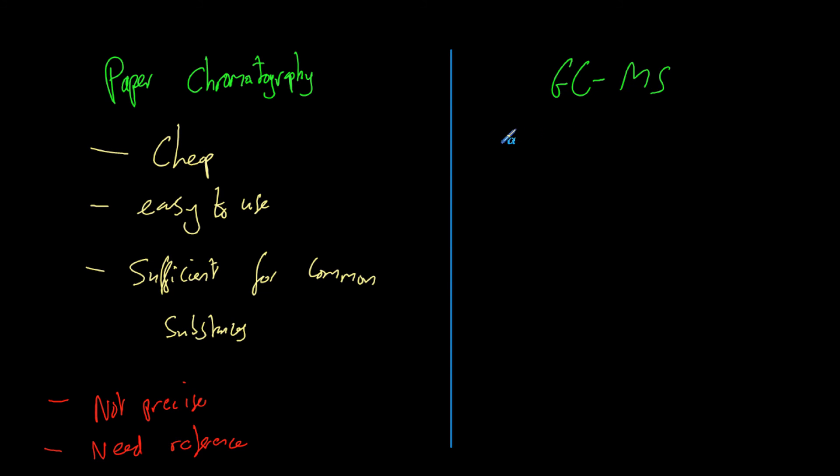Now, gas chromatography and mass spectrometry, the good thing about those is they are very precise. We don't always need a reference. If we use both, we can often figure out what something is without using a reference. We can use tiny samples. They're very sensitive. And they are also very fast. So with paper chromatography, we've got to wait for the solvent to rise up the paper. With gas chromatography and mass spec, they are actually very quick.